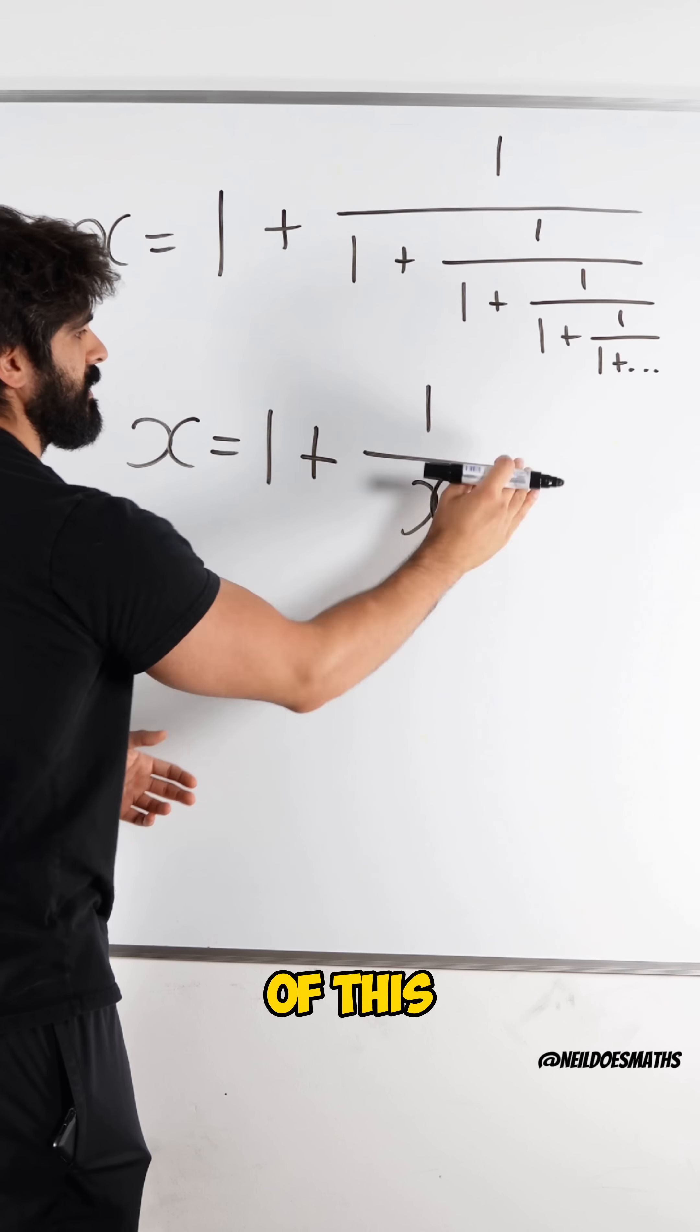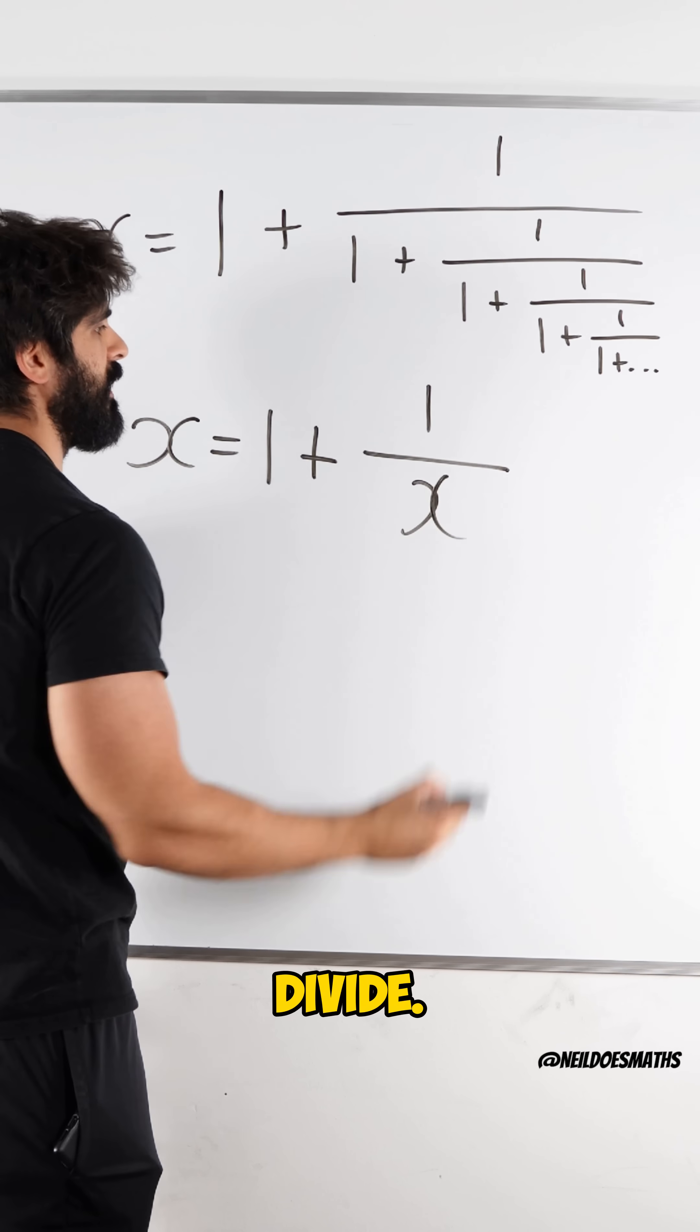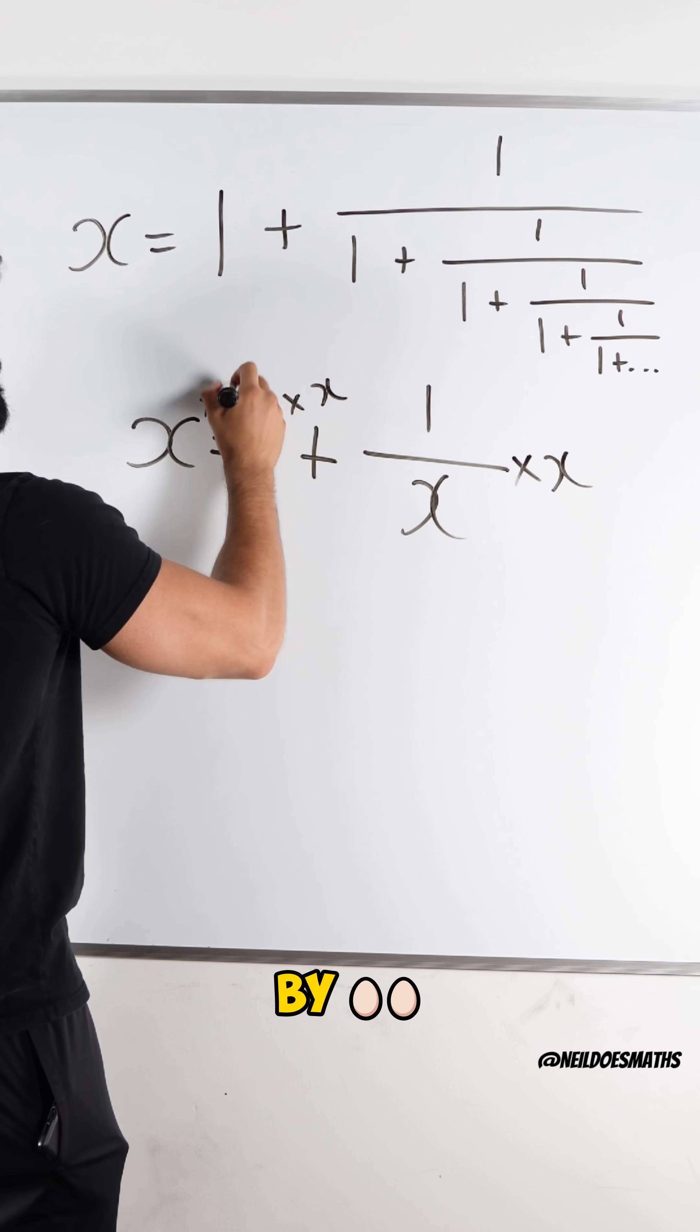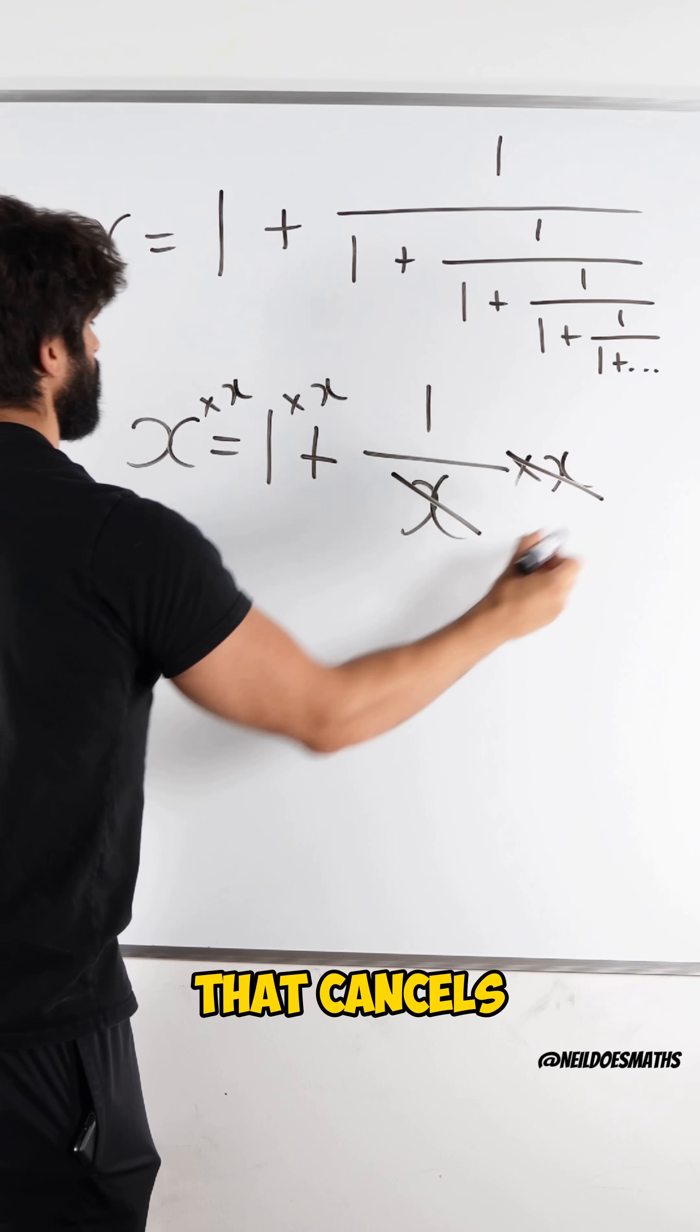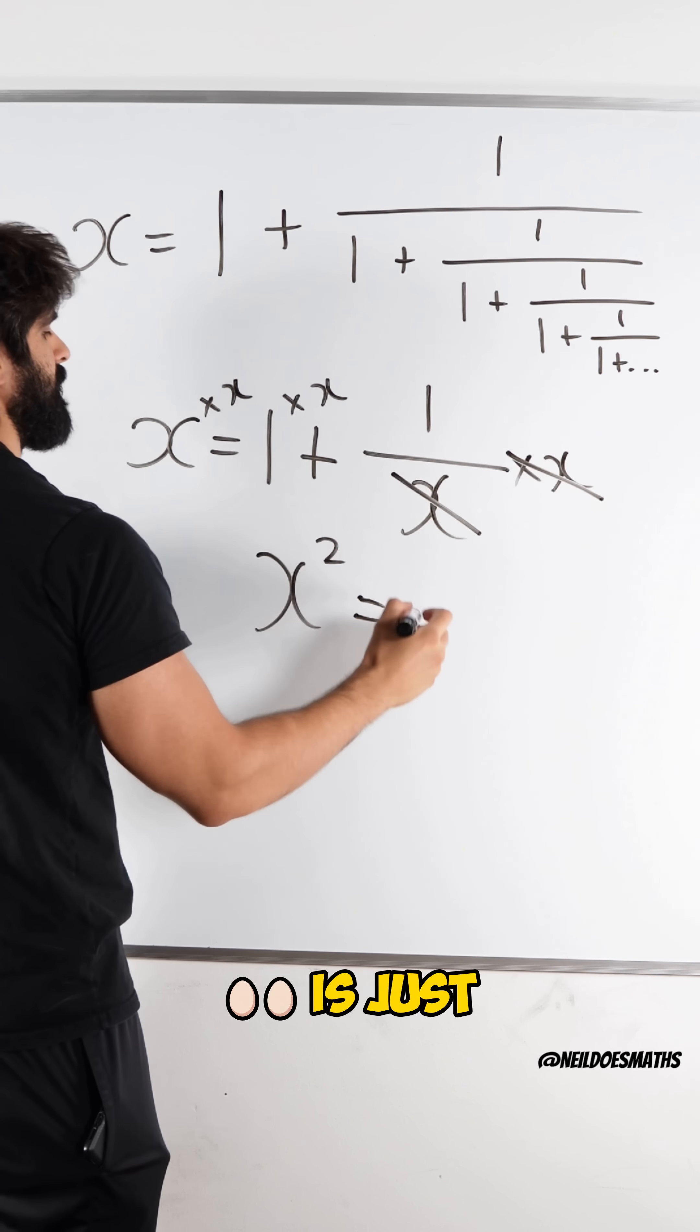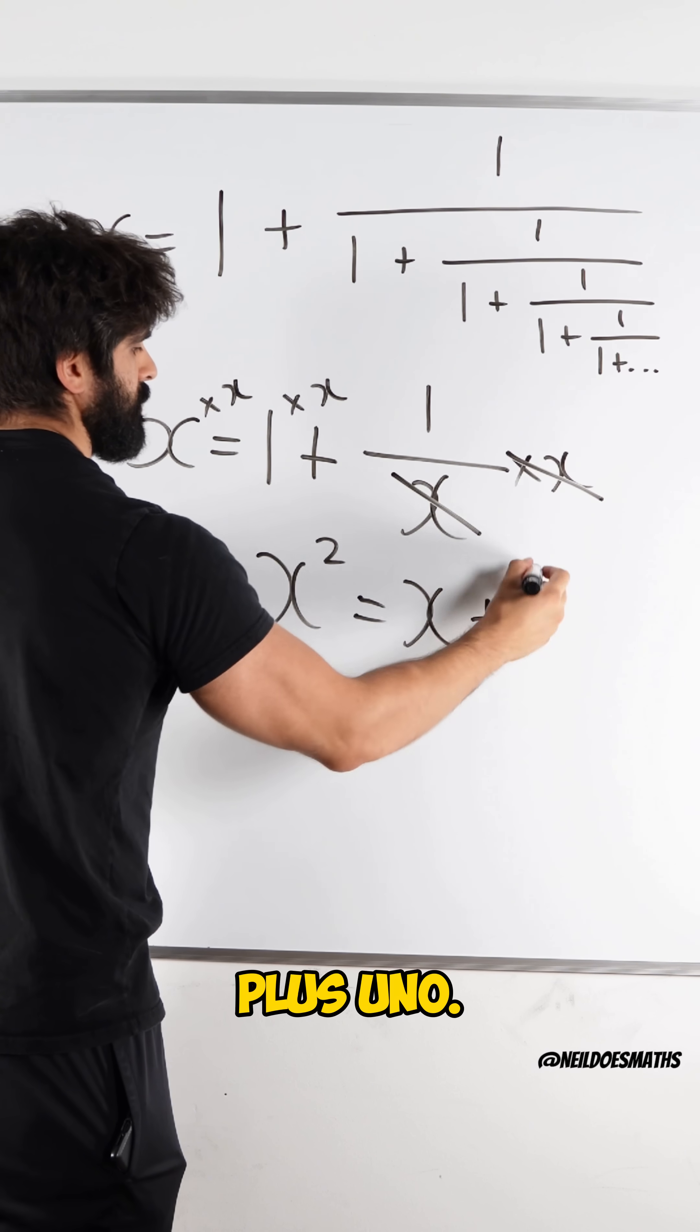So to solve this, I need to get rid of this fraction. Fraction means divide. The opposite of division is multiplication. So we're going to multiply through by x. That cancels. x times x is x squared. 1 times x is just x. 1 plus 1.